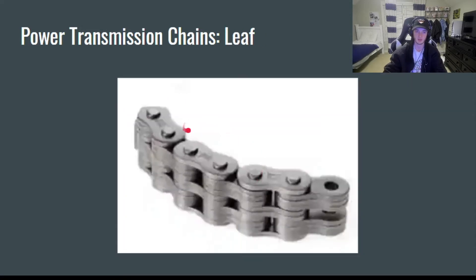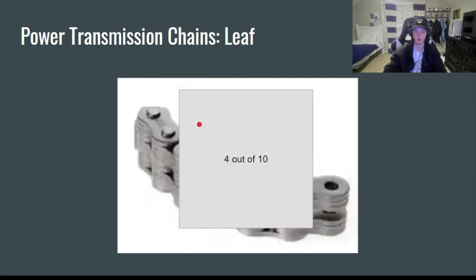Here we got the leaf chain. These ones are weird because they're actually not technically power transmission chains, and they use sheaves instead of sprockets. This is because they're designed to lift stuff, so they're very durable, but they're not able to run at very high speeds. These ones are very niche. I wouldn't worry too much about seeing it on the EOPA. I'll give them a 4 out of 10.